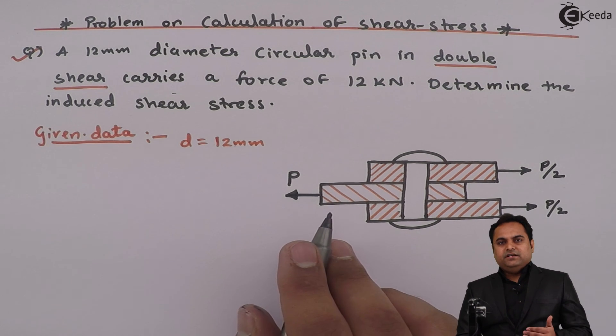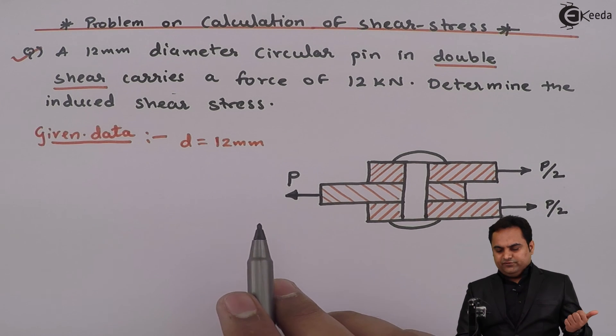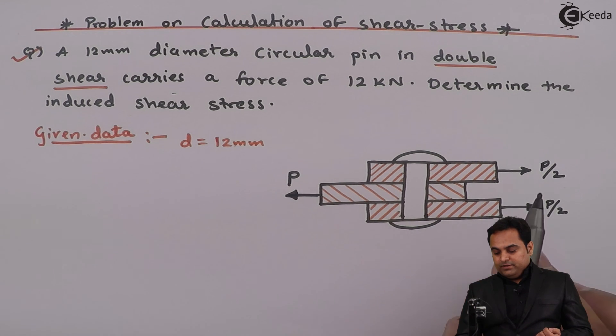It is clear that from the diagram, the middle plate is being pulled towards left with force P. The plates at the top and bottom are carrying the load which is half of P.